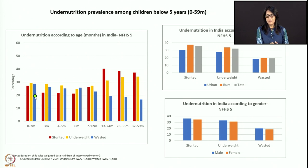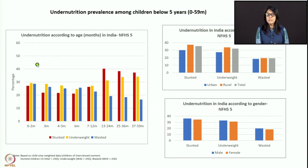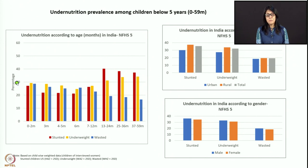What NFHS-5 showed is that between 0 to 2 months of age, almost 30 percent of children are wasted, 30 percent are underweight, and about 28 percent are stunted. That means right at birth and in the first two months, almost one-third of children are not doing well — that's a huge number. Now, in the first two months, what matters is mother's nutrition during pregnancy and breastfeeding.